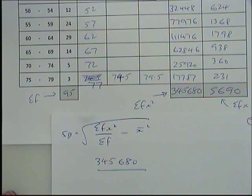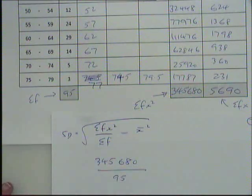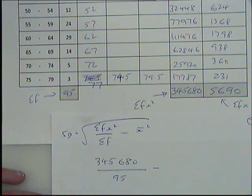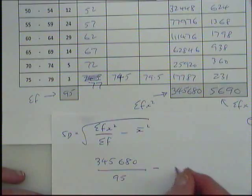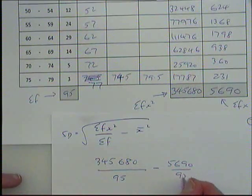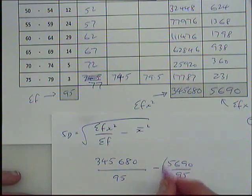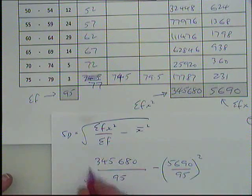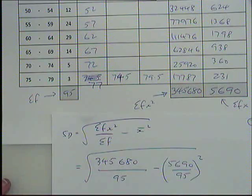Or was it the other way around? I got very confused now. So yeah, 95 down there, that was sigma f. Now, the mean, where do we get the mean from from here then? I'll divide 5690 by 95. Yeah, sigma fx over sigma f. That's the mean. That has to be squared, and we have to square root the whole lot.